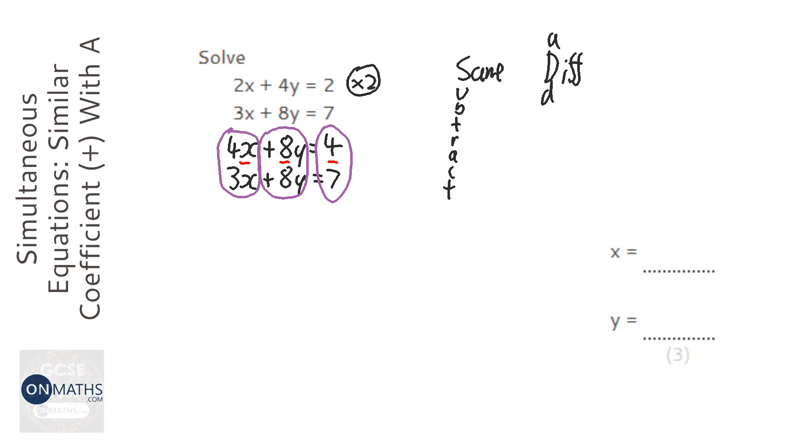Okay, so we've got 4x take away 3x, which is just x, which is good. We've got 8y take away 8y, which is nothing. And we've got 4 take away 7, which is minus 3.